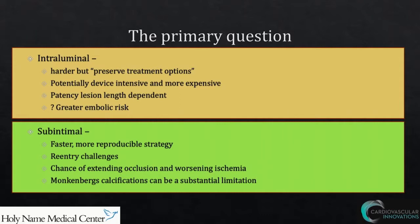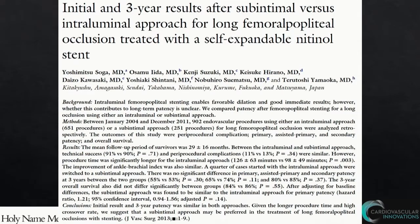Subintimal, certainly as we've developed this over the past almost 25 years, is faster and very reproducible. We used to get these SFA CTOs as surgical cases; now they're an hour-long endovascular case using the subintimal approach. There are reentry challenges. You have a chance of extending your occlusion, compromising collaterals, and worsening ischemia, which should not happen if you're conscientious. And of course that calcification in the media is a major limitation to reentering.